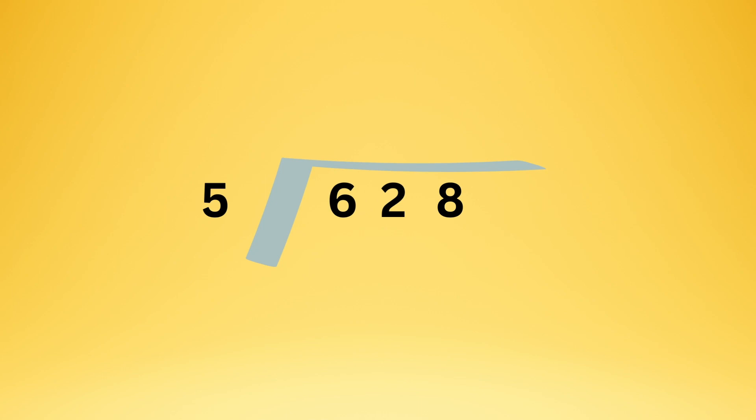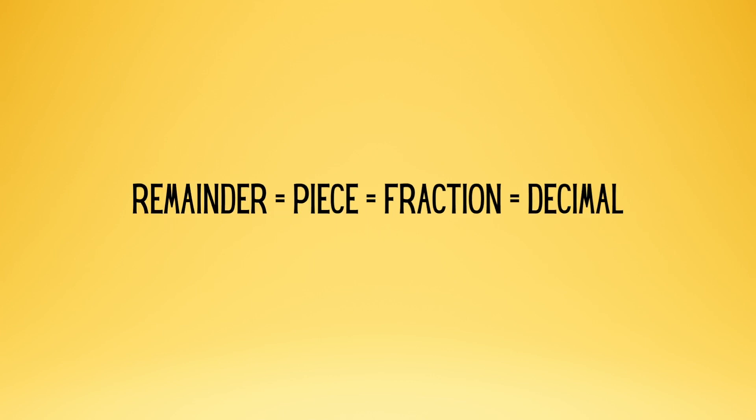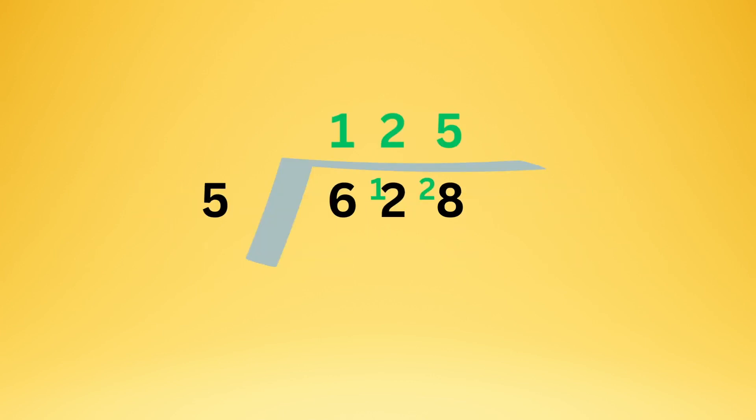and you've already gone through all the steps, where 5 goes into 6 once with 1 left over, and 5 goes into 12 twice with 2 left over, and 5 goes into 28 five times with 3 left over. But a remainder is a piece, which is a fraction, which is a decimal. All of these things are the same thing.